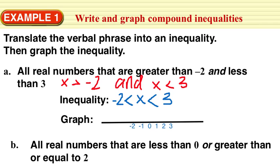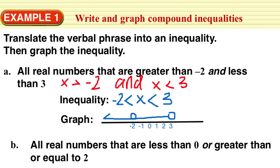Now let's graph this. On our number line, we know that x is greater than negative 2, so we have an open circle at negative 2 and go to the right. But we also know that x is less than 3, so we draw an open circle at 3 and go to the left. The graph of this compound inequality is where the two overlap each other — an open circle at both numbers with shading in between them.